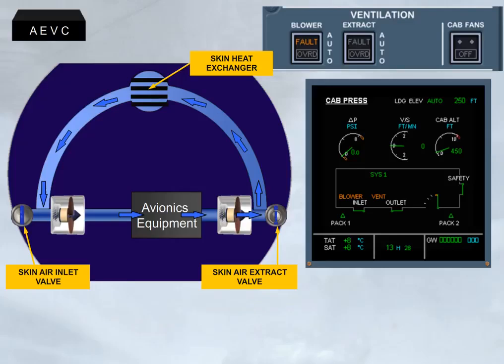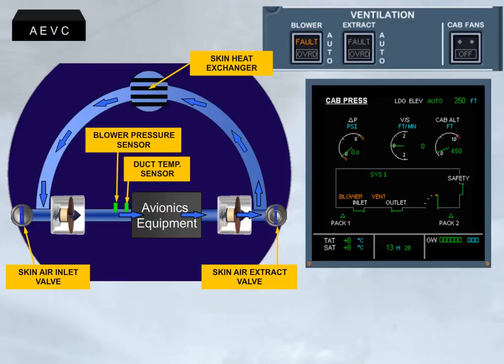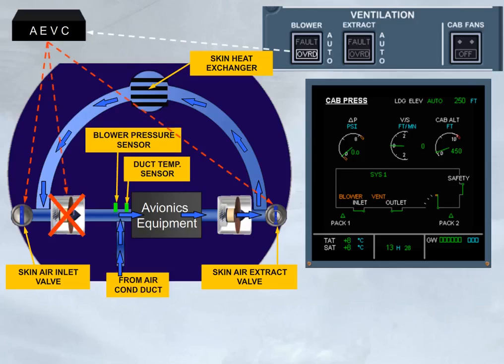A fault light comes on the related push-button switch in case of a blower flow problem or a duct overheat. Setting that push-button switch to override allows the ventilation system to be reconfigured by activating the closed-circuit configuration, by stopping the blower fan, and by adding air from the air conditioning duct through an air conditioning inlet valve.